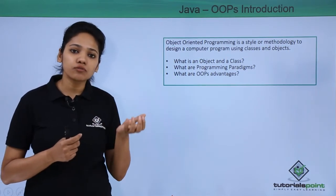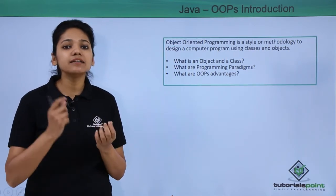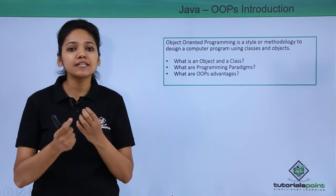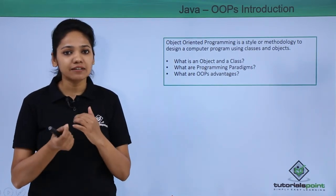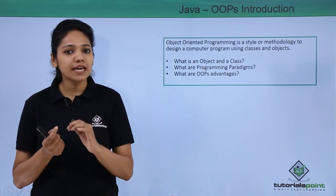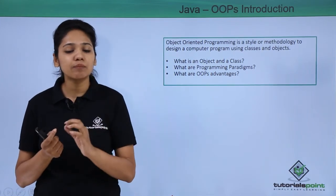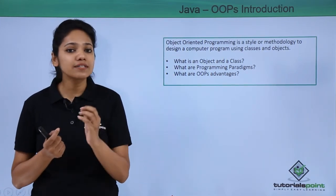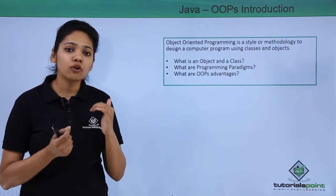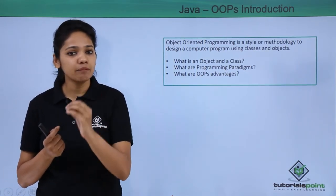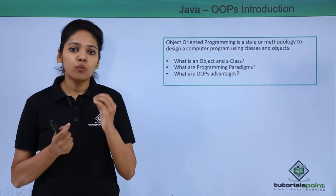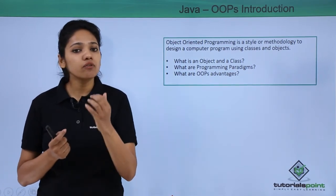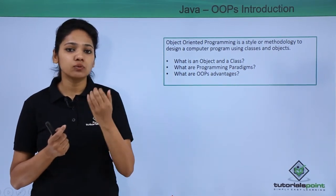A software object and a real-world object have certain similar characteristics — state and behavior. Like in the real world you have certain state and behavior, in software you have certain fields and methods, where the state of the object is stored in fields and the behavior of objects is stored in methods.